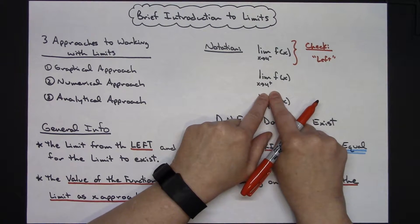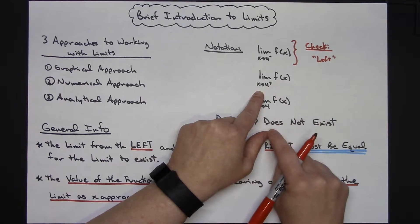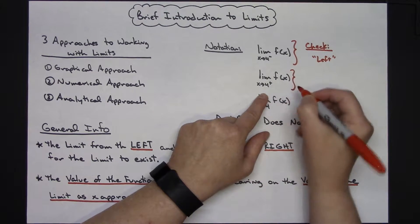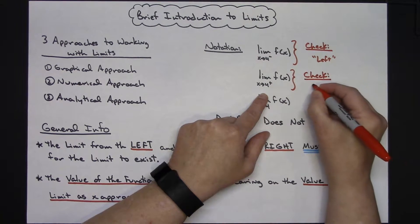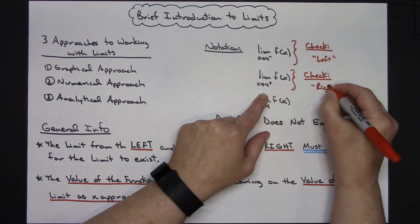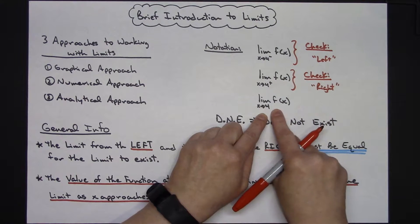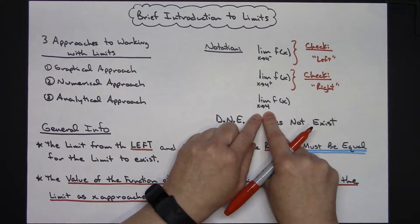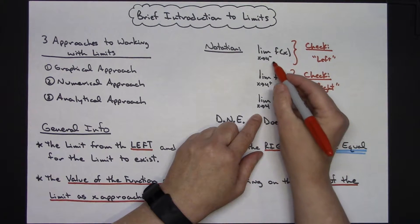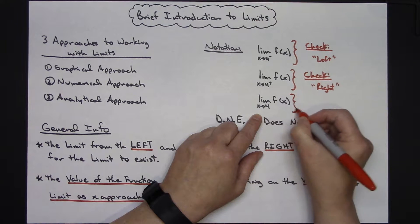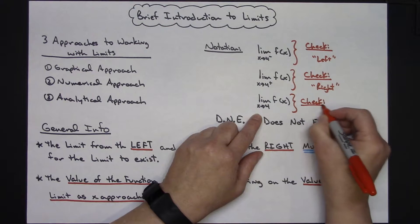The next notation: the limit as x approaches 4 from the right of f of x. If we were using a graphical approach, we would be checking the limit from the right. And if it does not have the little plus or minus sign, then it's just the limit as x approaches 4 of f of x — meaning we need to check both the left and the right.